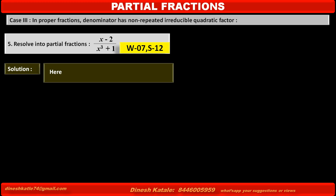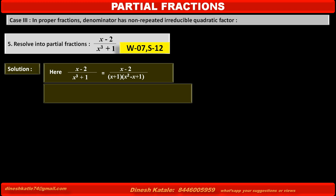The given fraction (x minus 2) upon (x cubed plus 1) — the denominator x cubed plus 1 can be factorized as (x plus 1) into (x squared minus x plus 1). The denominator has two factors: one is (x plus 1), which is linear, and the other is (x squared minus x plus 1), which is quadratic, irreducible, and non-repeated.